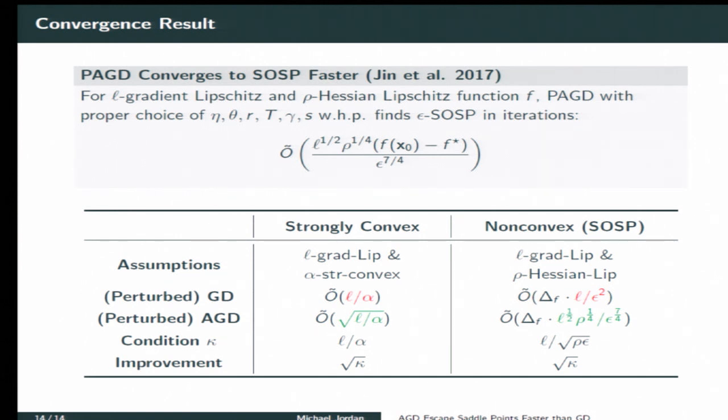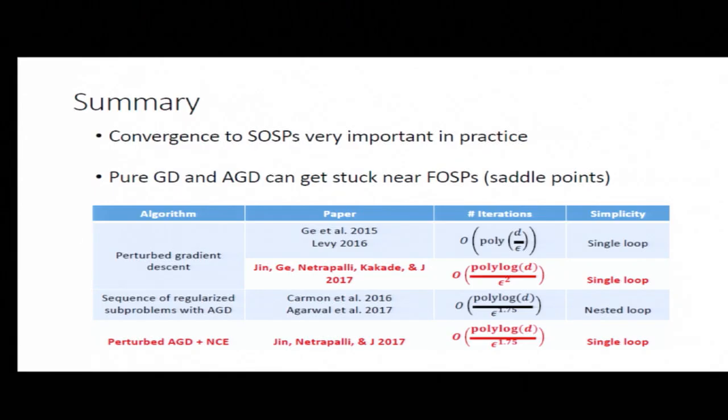So to put these things side by side, in the classical strongly convex case, perturbed GD, perturbed AGD have those rates as shown, and really what's happening is there's a condition number, which is L over alpha, which is playing the role of the improvement obtained by AGD. And the same thing is happening here, it's just a different notion of condition number. So in fact, that string of Lipschitz constants there with all those powers actually really is a form of condition number. So to conclude, it really is important to get to converge to second order stationary points, that's really major progress in the literature. And pure AGD and GD can get stuck. But just putting a few simple ingredients together, AGD and a little bit of stochasticity can give you these fast rates. Thank you.